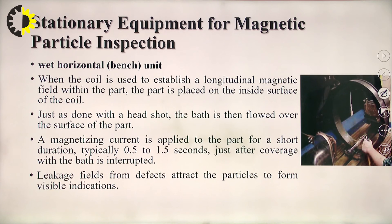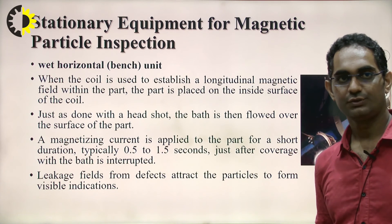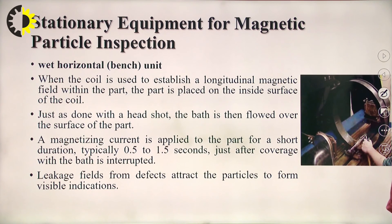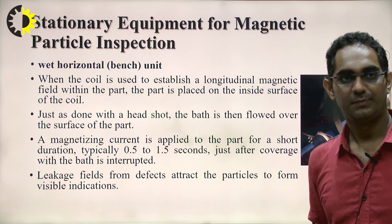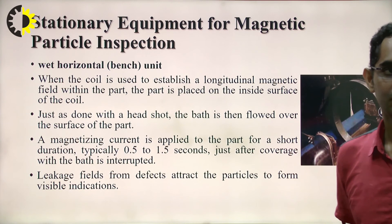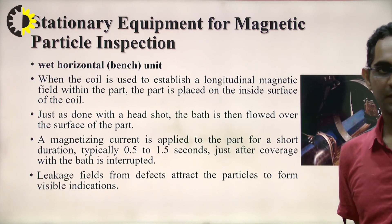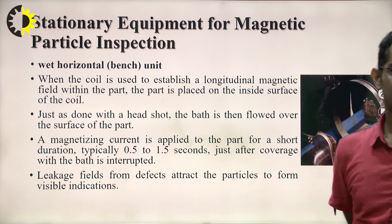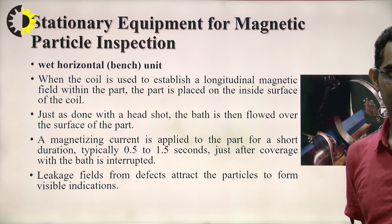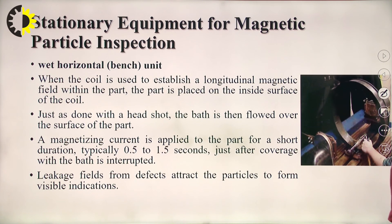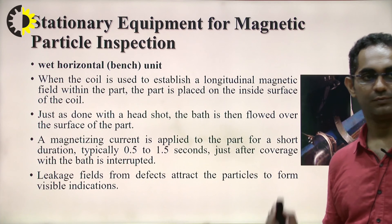When a coil is used to establish a longitudinal magnetic field, the part is placed on the inside surface of the coil. The bath is flowed over the surface of the part, and a magnetizing current is applied for typically 0.5 to 1.5 seconds just after coverage with the bath is interrupted. Leakage fields from defects attract the particles to form the visible indications.